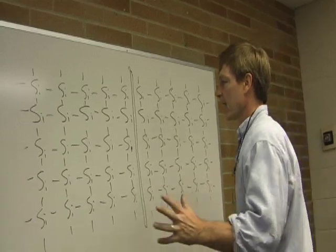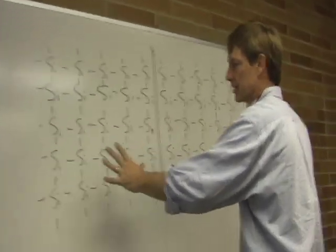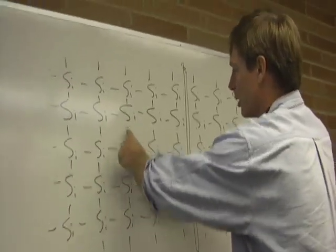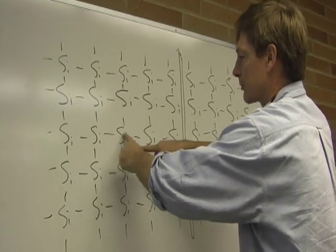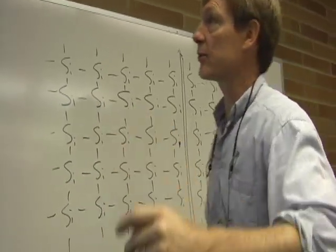This is an example. I've got a silicon matrix. And you see how it's arranged. There are four contacts with each silicon with each other.